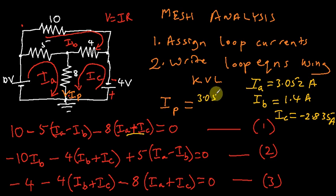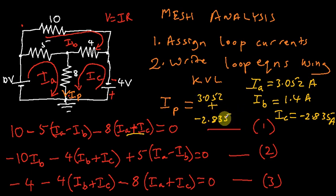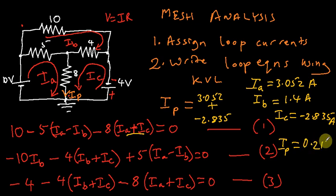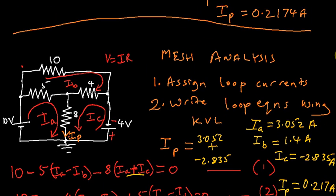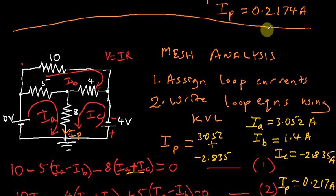So your IP will be equal to 3.052 plus negative 2.835. When you go ahead and compute that, you end up with an IP approximately equal to 0.217 amperes. Scrolling up, that's exactly what we got earlier with the branch current method — IP equals 0.217 amperes. With mesh analysis we found exactly the same answer.